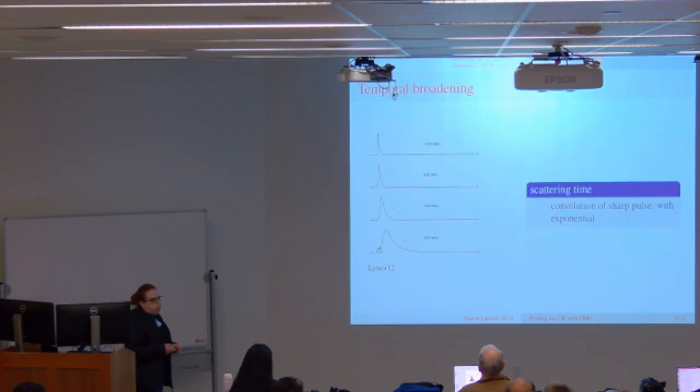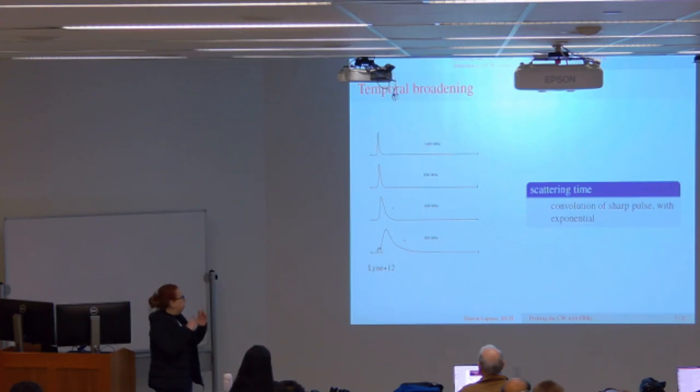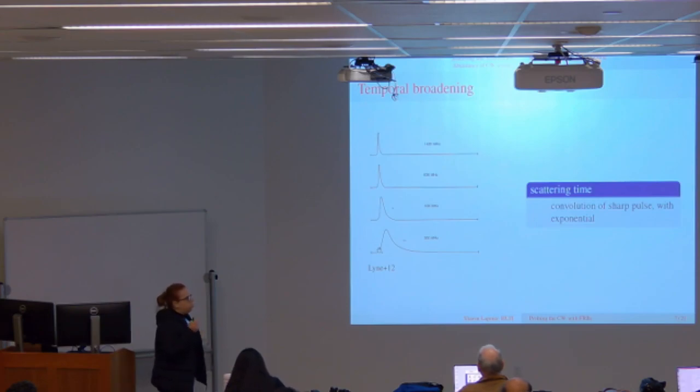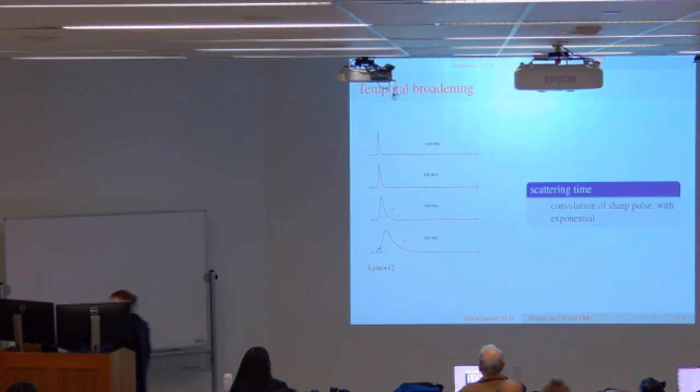As I said before, the scattering time scale is basically the broadening of this signal. You can see here different frequencies showing the same - in this case, the pulsar - and you can see this broadening. There's a very strong dependence on frequency. If you have a pulse which is almost like a delta function, very sharp, once you have scattering it will have this exponential tail.